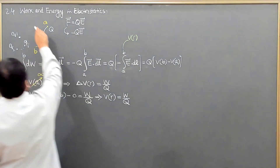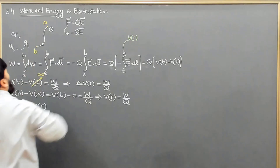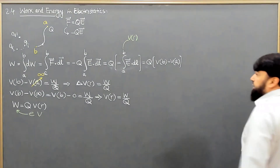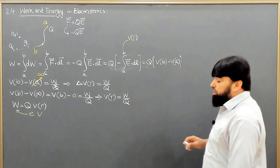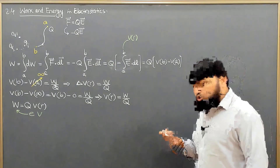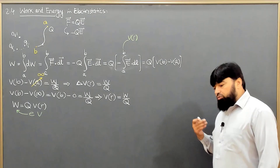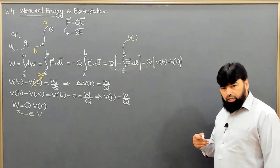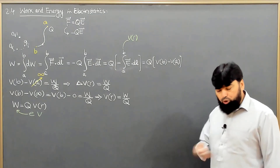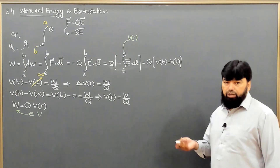Work and energy are basically the same thing — they are not different. When we store that energy, the work stored is energy. When it's in the form of storage, we call it potential energy. When the energy is in the form of motion or execution, we call it kinetic energy. These are the usual terms we use in specific scenarios.